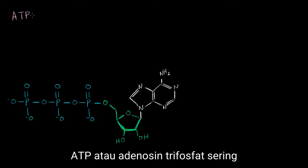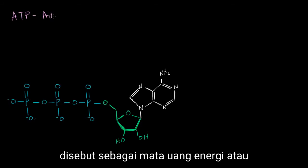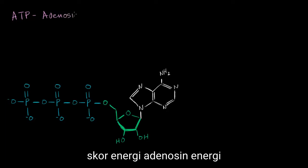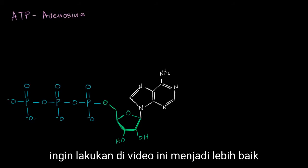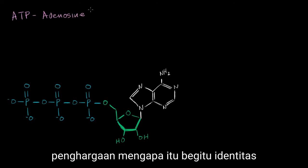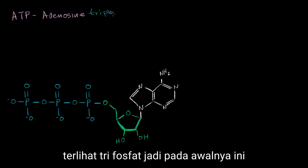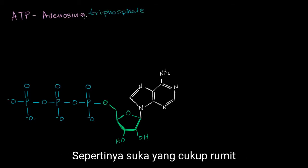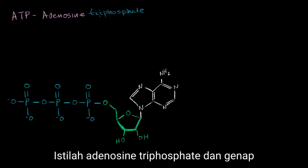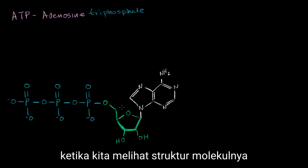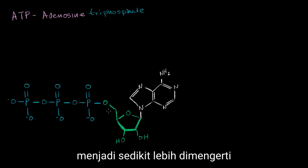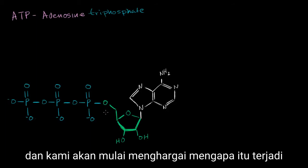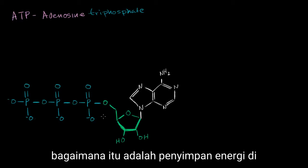ATP, or adenosine triphosphate, is often referred to as the currency of energy, or the energy store, in biological systems. And what I want to do in this video is get a better appreciation of why that is. So adenosine triphosphate — this seems like a fairly complicated term. And even when we look at its molecular structure, it seems quite involved. But if we break it down into its constituent parts, it becomes a little bit more understandable, and we'll begin to appreciate how it is a store of energy in biological systems.